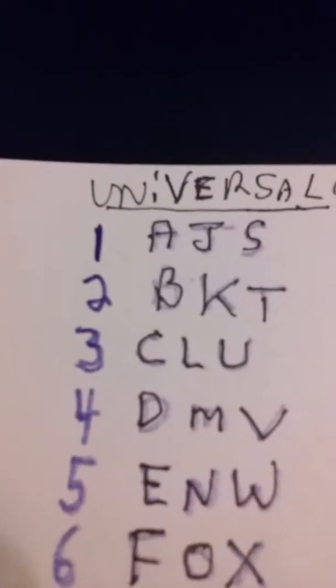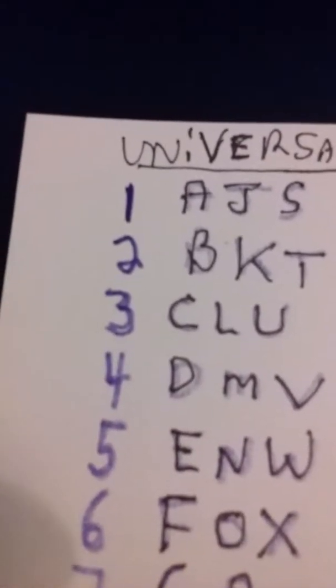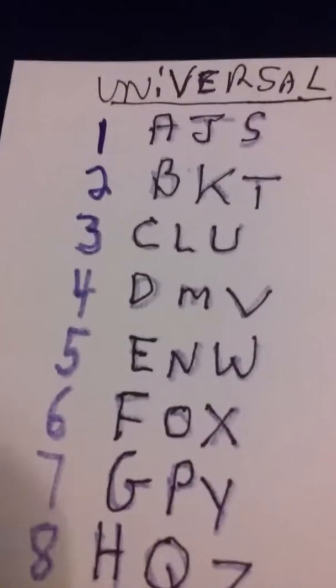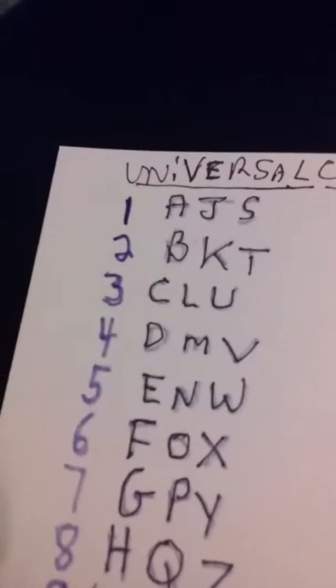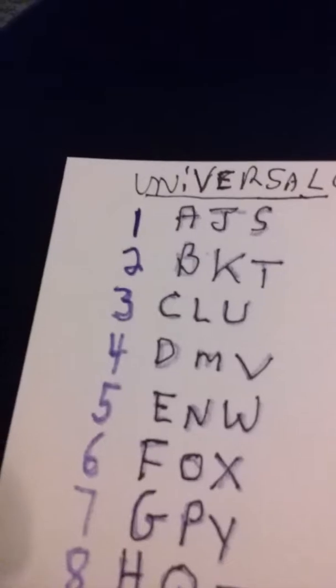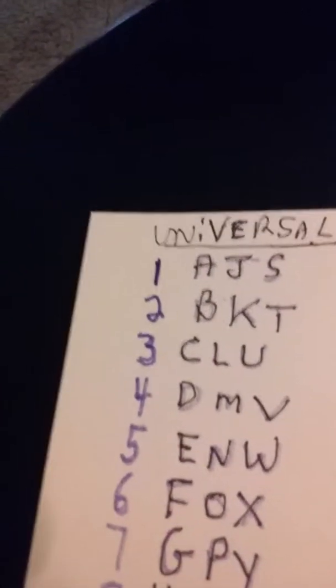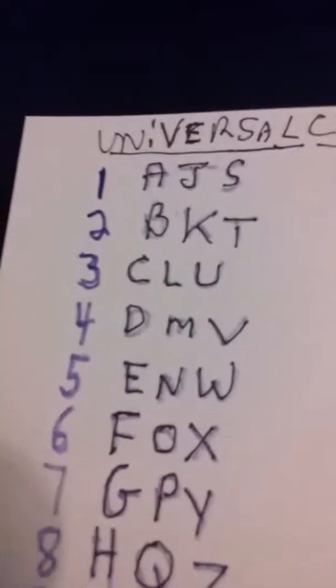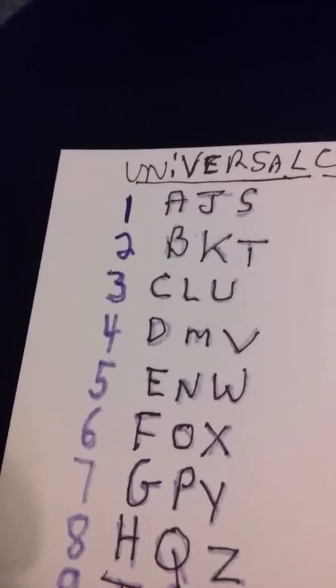CLU is the third. First of all, you have the AJS. And you find out how many AJs or Ss they have. That equals the letter 1. Then if they have a BKT, if they don't have any, you put 0. And then you look at CLU, which is 3. It's the third letter of the alphabet, the 12th, and the 21st, which all add up to 3. And you see if they have any DMVs. That would be the 4th, the 13th, and the 22nd letter of our alphabet.